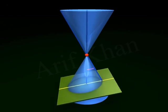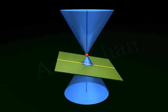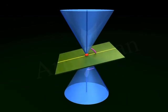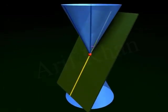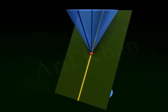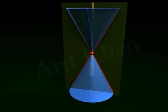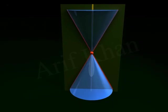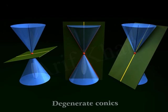Degenerate conics. If the plane intersects the double right circular cone at its vertex, the ellipse becomes a point, the parabola becomes a line, and the hyperbola becomes two intersecting lines. The figures so obtained are called degenerate conics.